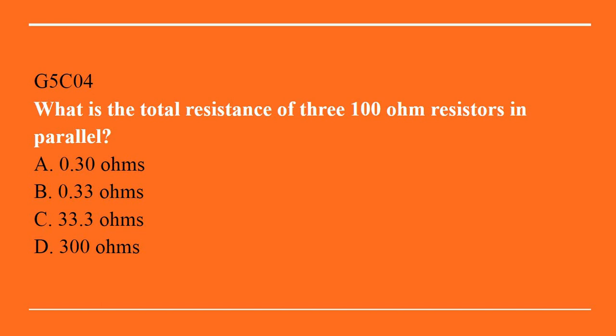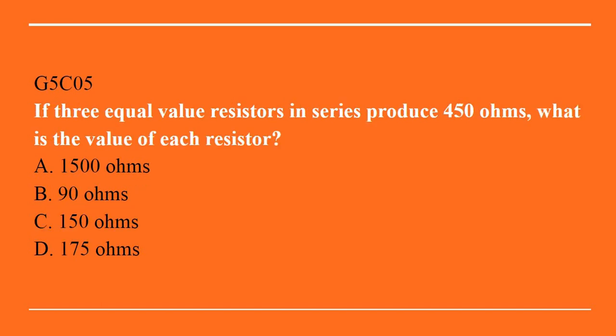G5C04: what is the total resistance of three 100 ohm resistors in parallel? A. 0.30 ohms. B. 0.33 ohms. C. 33.3 ohms. Or D. 300 ohms. Correct answer is C: 33.3 ohms. G5C05: if three equal value resistors in series produce 450 ohms, what is the value of each resistor? A. 1500 ohms. B. 90 ohms. C. 150 ohms. Or D. 175 ohms. Answer is C: 150 ohms.